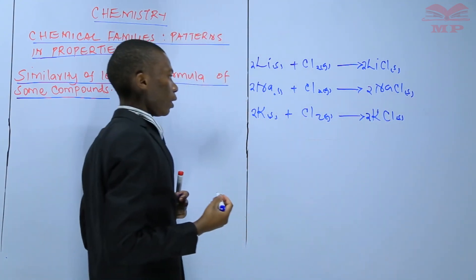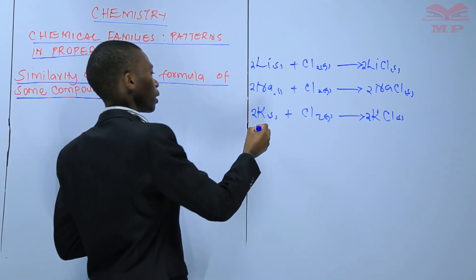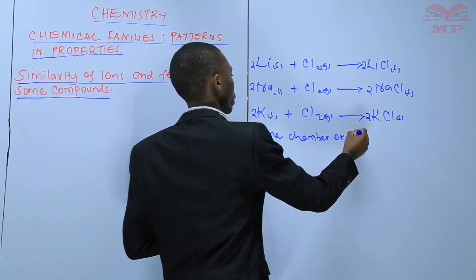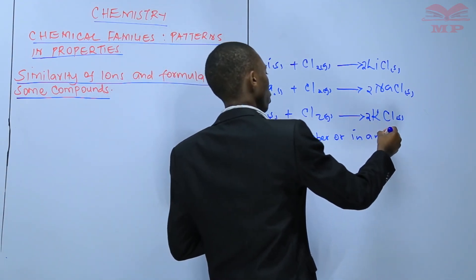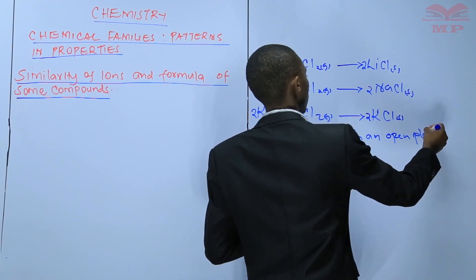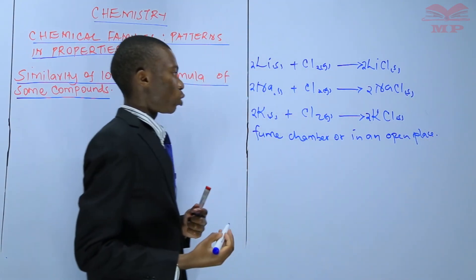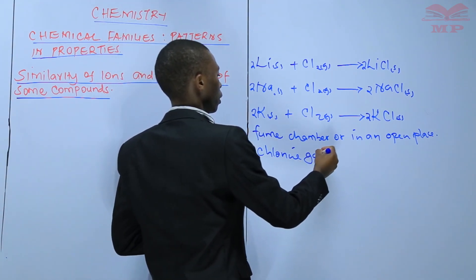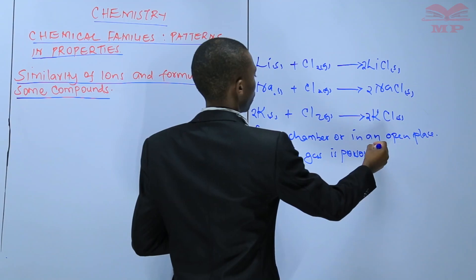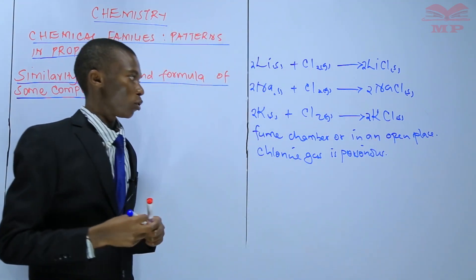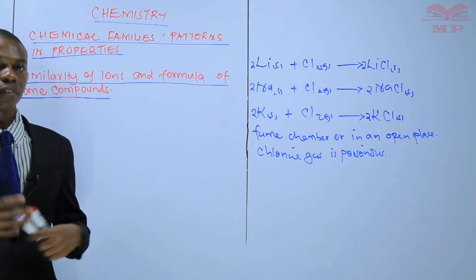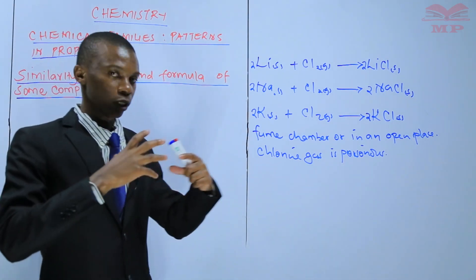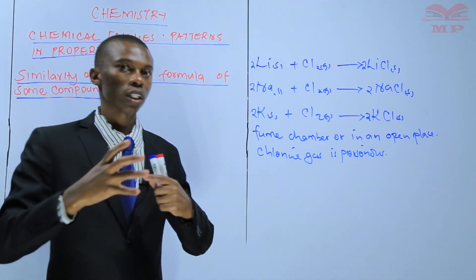Remember, these reactions should take place in a fume chamber or in an open place. This is because chlorine gas is poisonous and may affect your respiratory system. So you should ensure that you don't come into contact with chlorine gas.